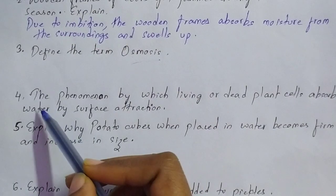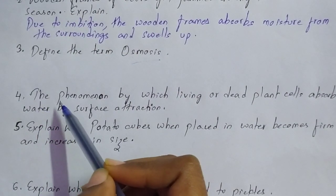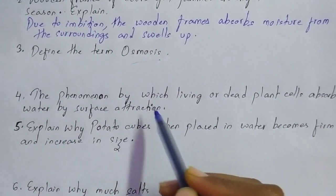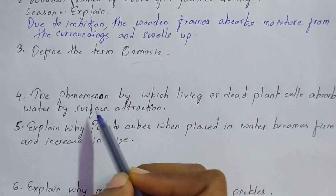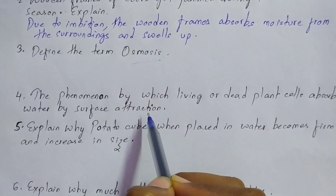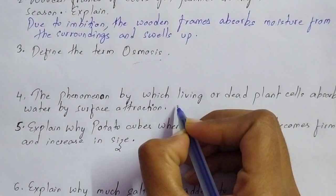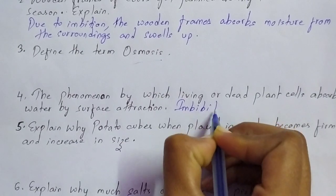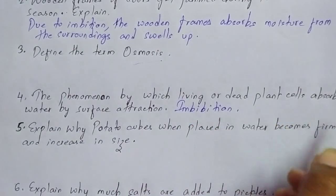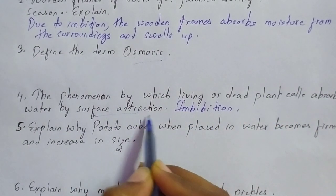Moving on to question number four, which is again a 'name the following' type of question. The question is: name the phenomenon by which living or dead plant cells absorb water by surface attraction. The answer is imbibition. Imbibition is the phenomenon by which living or dead plant cells absorb water by surface attraction.